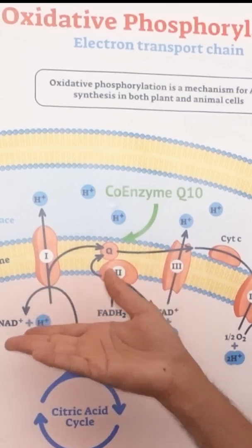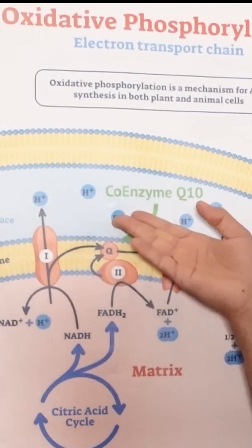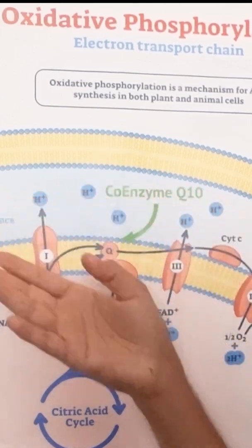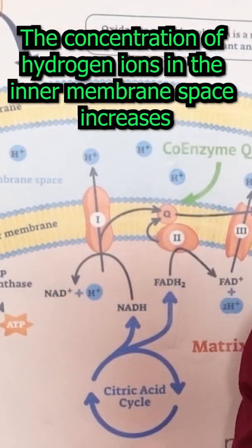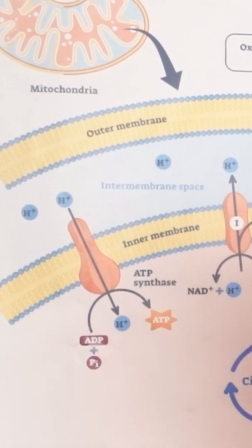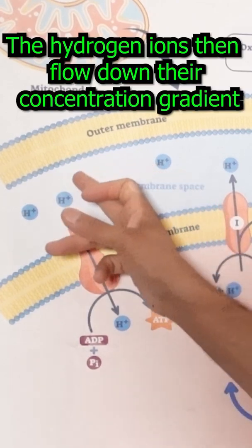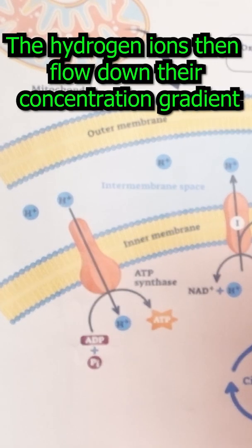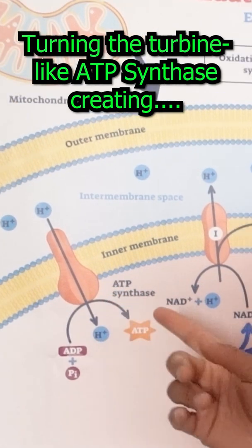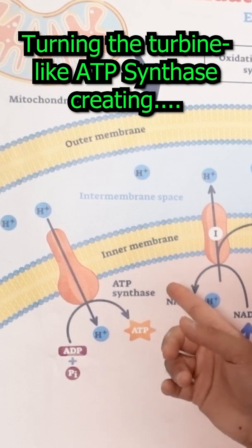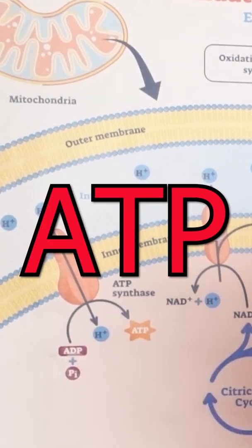At the same time, the electron transport chain is pushing protons into this inner membrane space. After a period of time, we get a massive concentration of hydrogen ions or protons in this inner membrane space, and they're able to flow down their concentration gradient, literally turning a small turbine called ATP synthase, which is used to produce ATP.